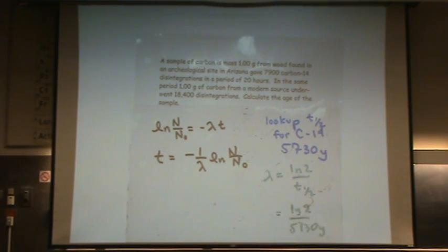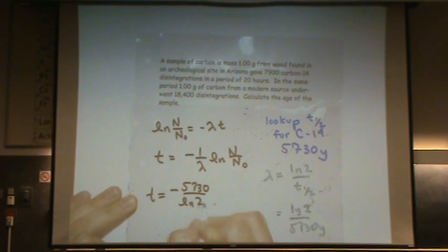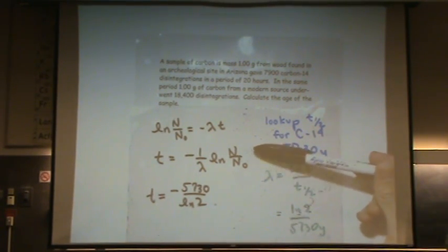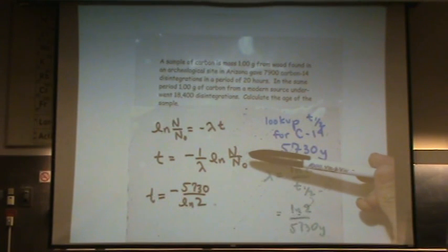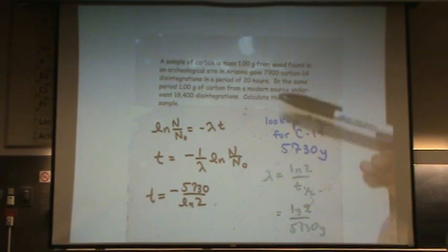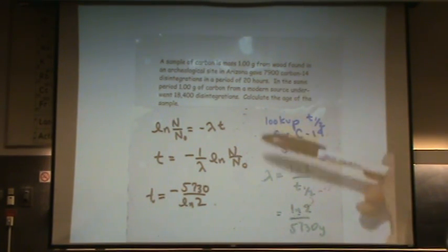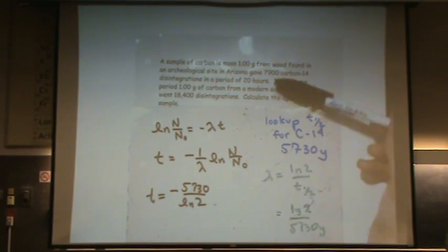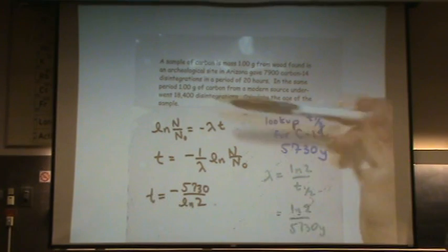Now let's plug into our formula. T equals minus 1 over lambda, so I'll reciprocate that: 5,730 over the natural log of 2. N, and that's at time t, so that's our current, that would be the 7,900. And N₀ is going to be your control. That's when this original wood was alive, it would have been 8,400.